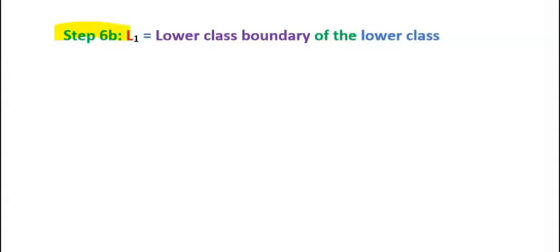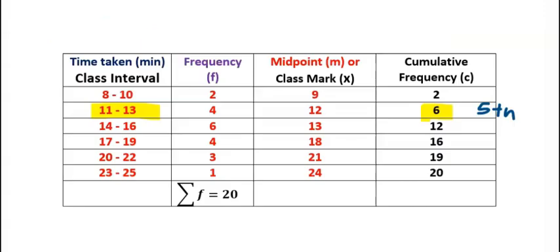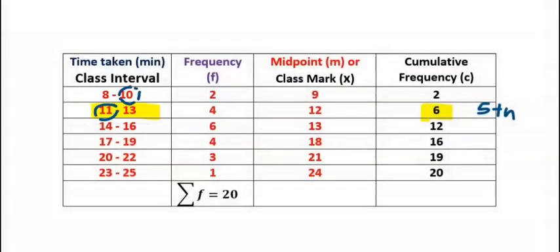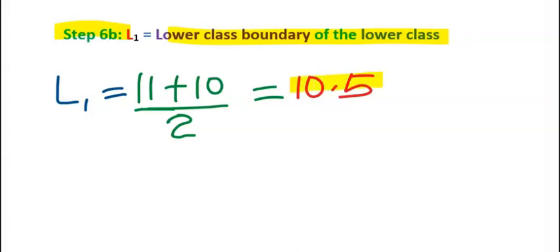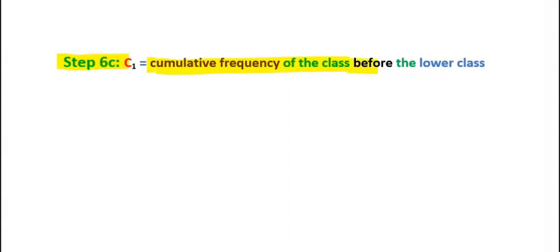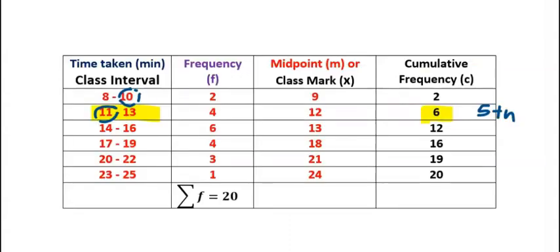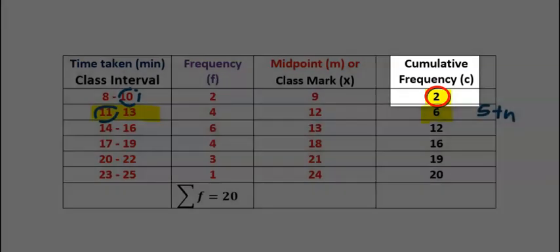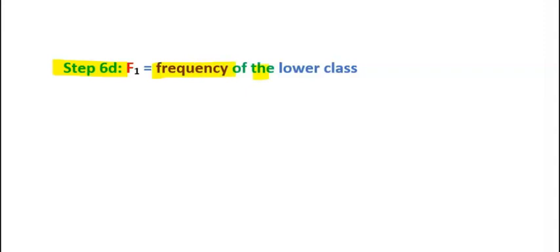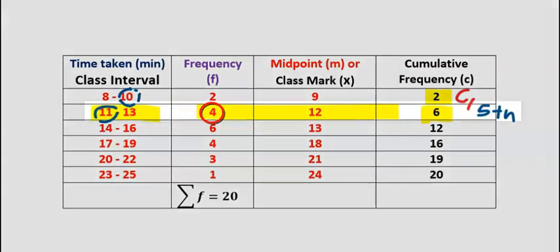Step 6B: find the lower class boundary of the lower class. We add 10 and 11 and divide by 2, obtaining L1 as 10.5. Step 6C: find the cumulative frequency of the class before the lower class, which is 2. Hence, 2 becomes our C1. Step 6D: find the frequency of the lower class, which is 4. Hence, 4 becomes our F1.